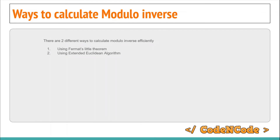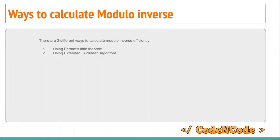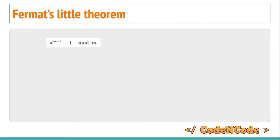The first method is using Fermat's little theorem and the other is using the extended Euclidean algorithm. The running time of both algorithms is roughly the same. In this lecture we are going to study Fermat's little theorem to calculate modular inverse. Fermat's little theorem says that for a prime number m and an integer a which is co-prime with m — meaning the GCD of m and a is 1, so they don't share any prime divisor — a raised to the power m minus one is congruent to 1 under modulo m. This is Fermat's little theorem.